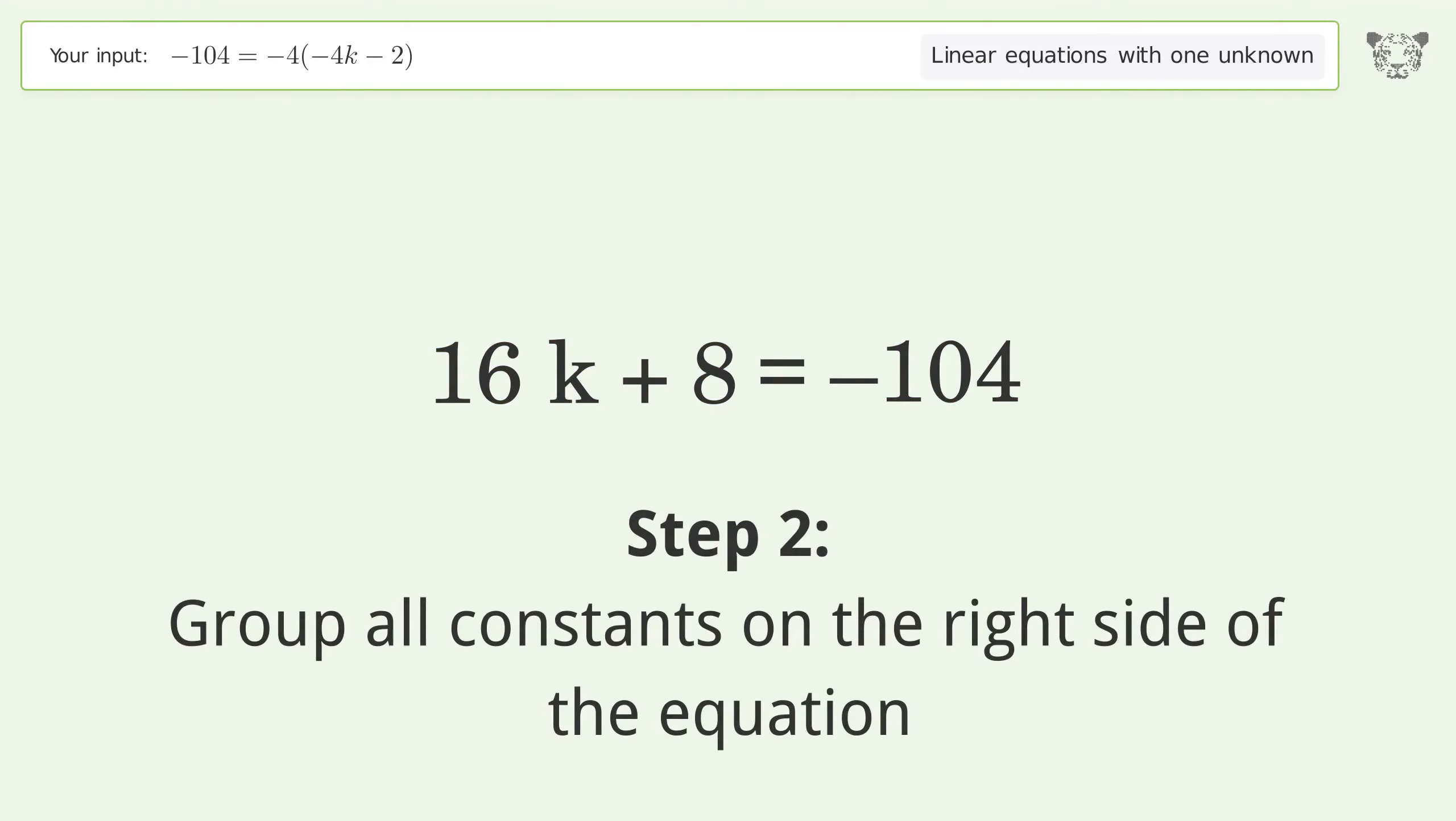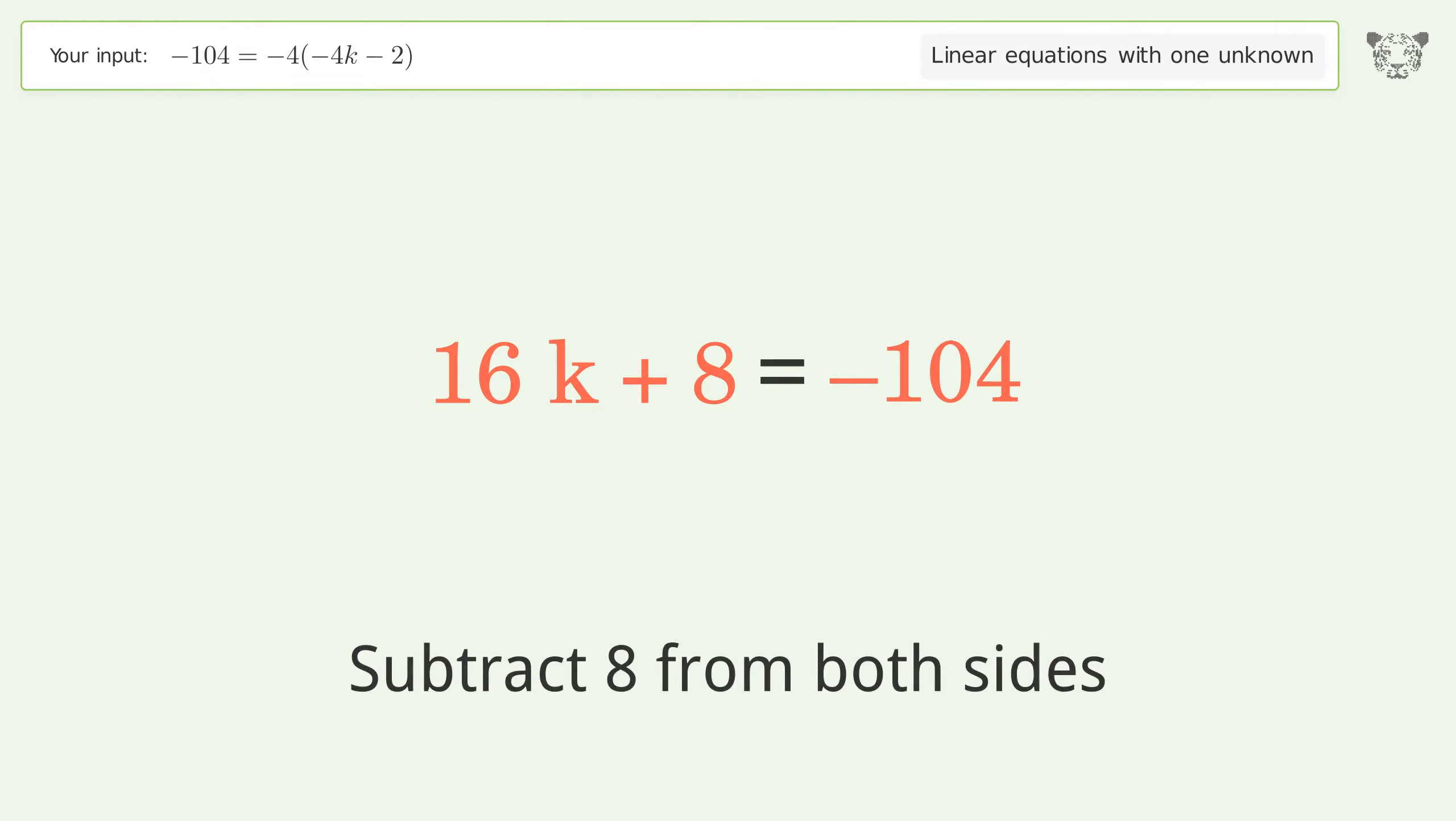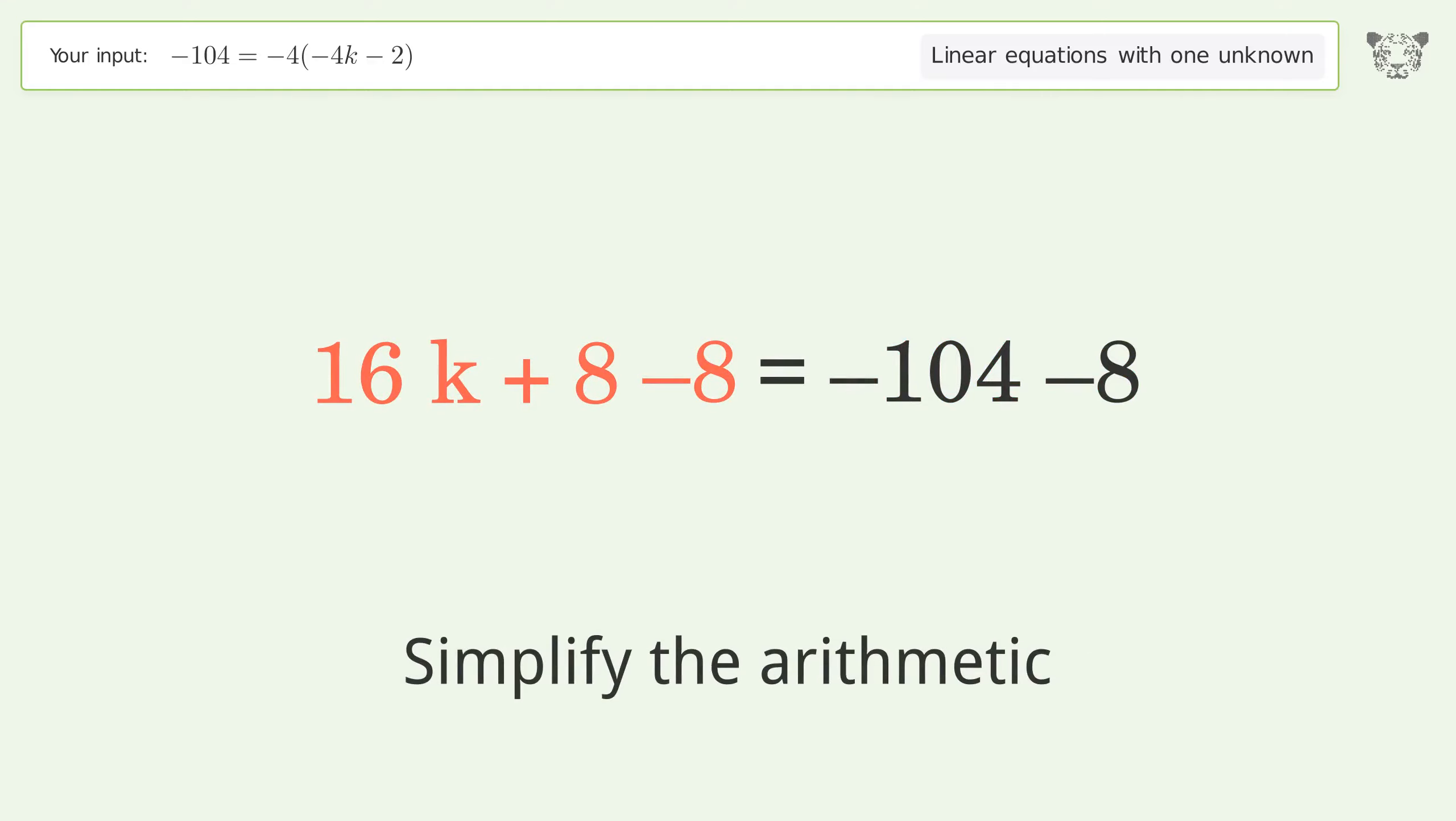Group all constants on the right side of the equation. Subtract 8 from both sides and simplify the arithmetic.